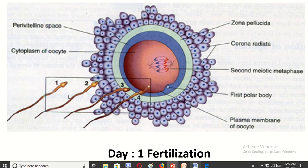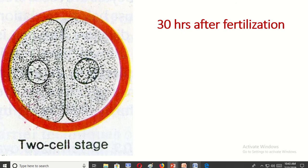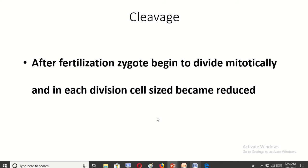Sperm have to cross three barriers: first the corona radiata, then the zona pellucida, then the oocyte cell membrane. This is fertilization day one. This is the male and female pronucleus, and this is the polar body which still stays. It is seen after 30 hours of fertilization.